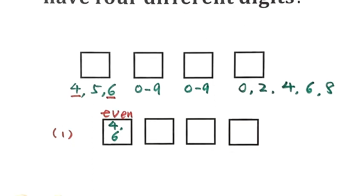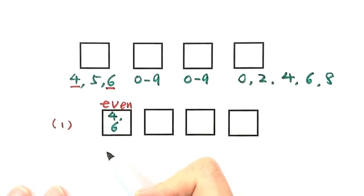That's for the thousandth digit. Now let's look at the one's digit. Originally we have five options here, but because one even digit has already been taken, we have four choices left. So 4 choose 1.